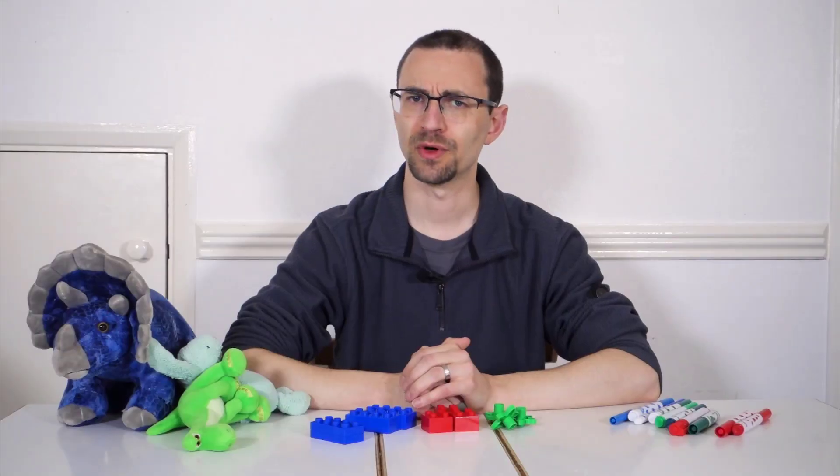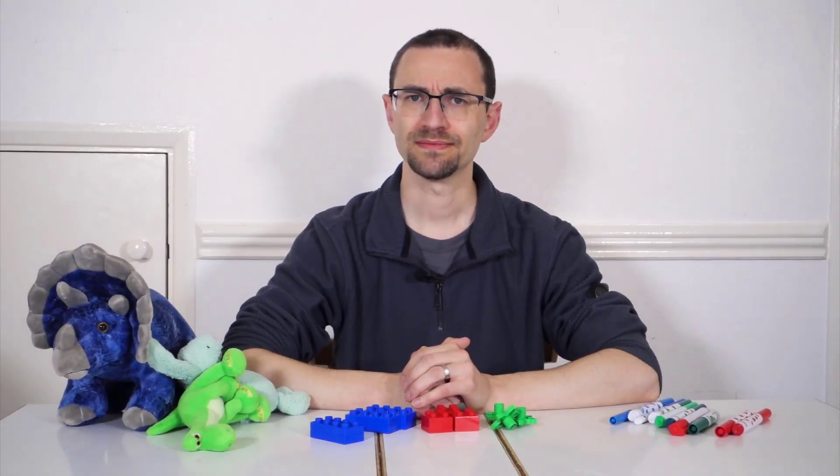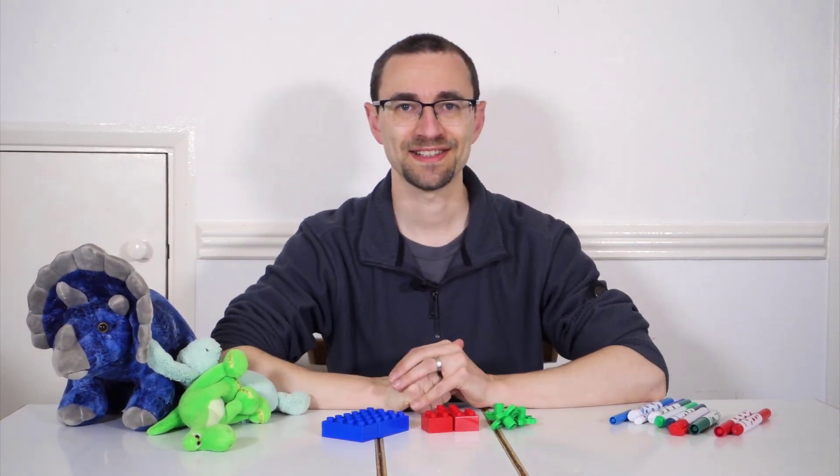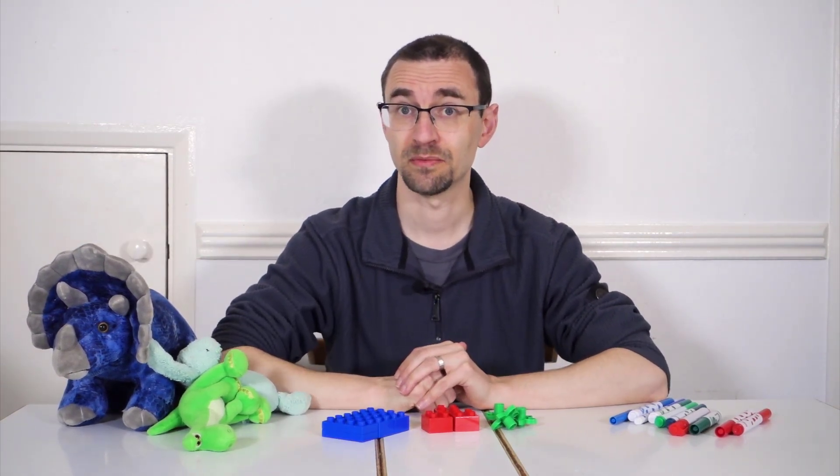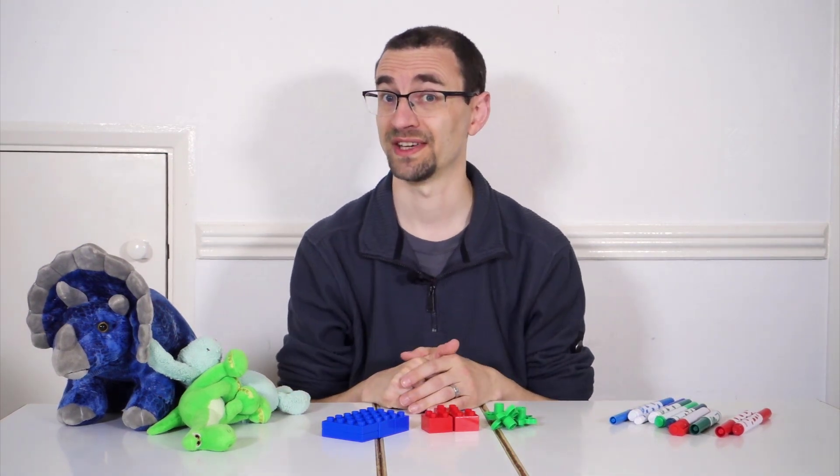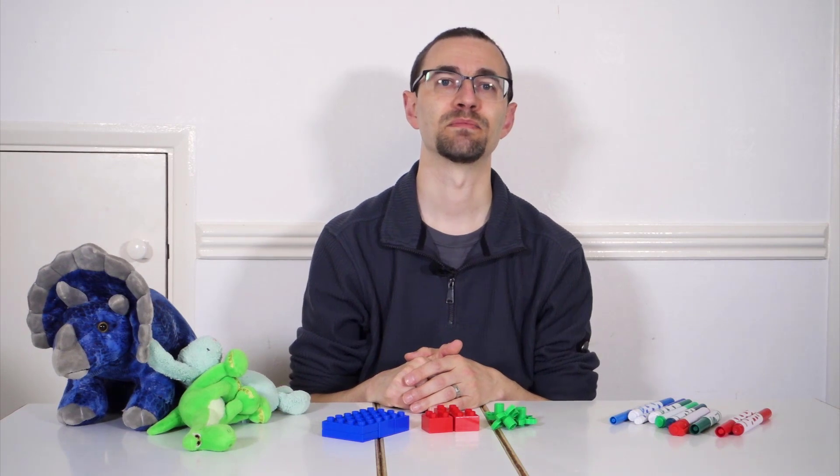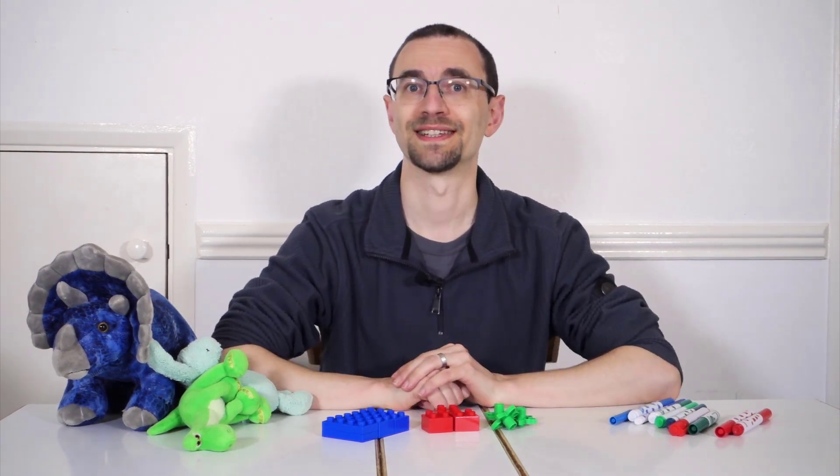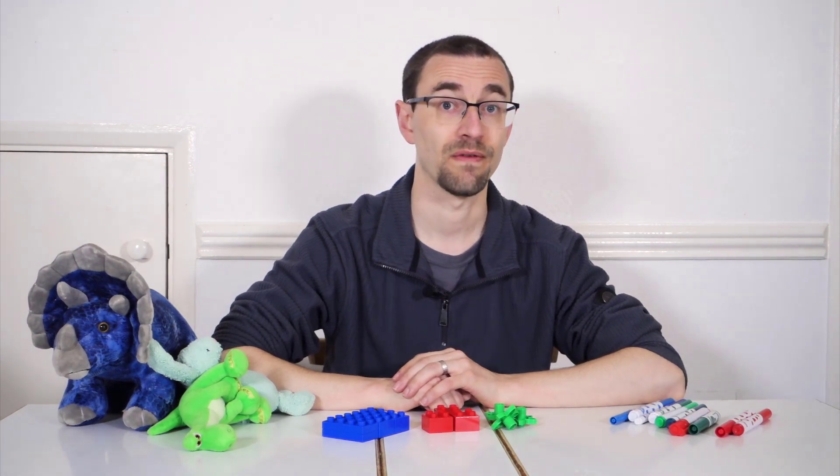So how does this work in practice? Well let's say I want to find all the blue bricks. The optimizer estimates the selectivity of this by dividing 1 by the number of different colors there are, 3, to give 1 third. It then multiplies this by the total number of bricks, 9, to give an estimated cardinality of 3.